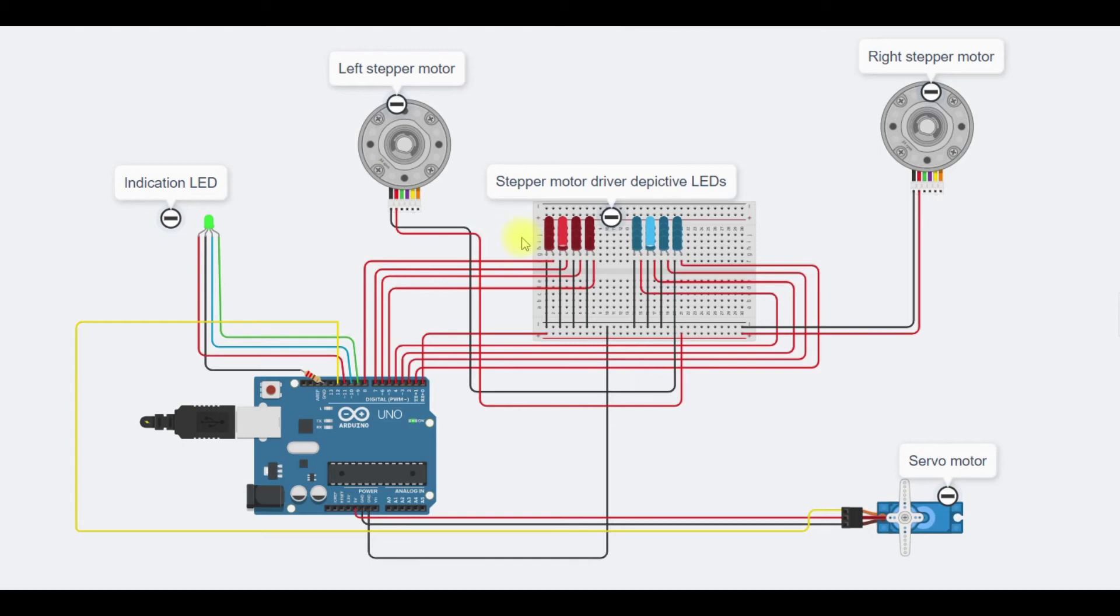And the stepper motor start rotating. These indicate the coil order of the stepper motors. And the servo motor turns 0 to 90 and then back to 90. The indication LED glows red indicating the end of process. This LED glows again green for the new process. This process goes on until the drawing is complete.